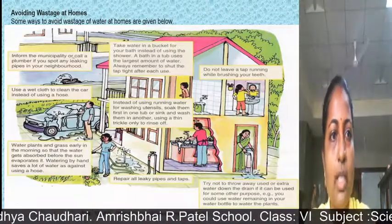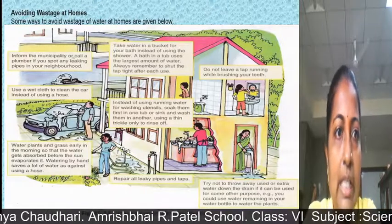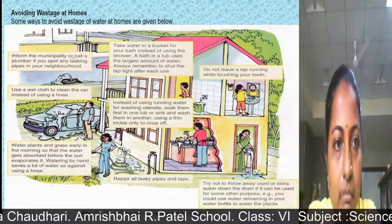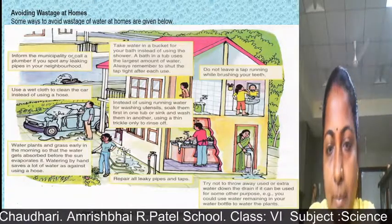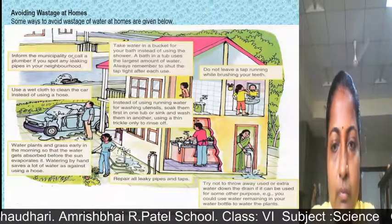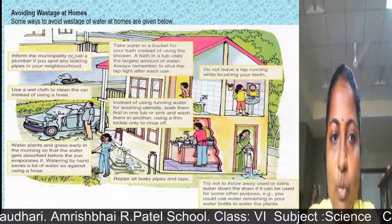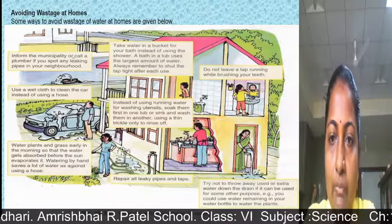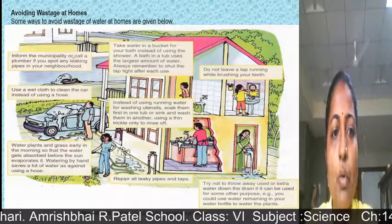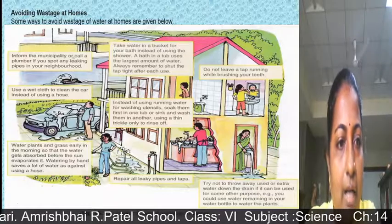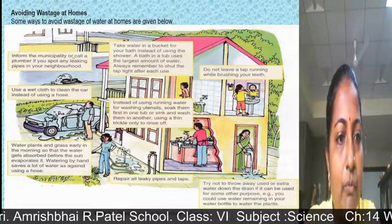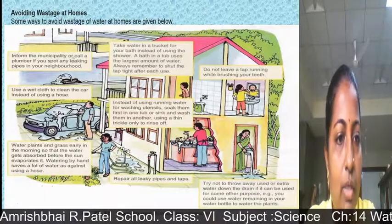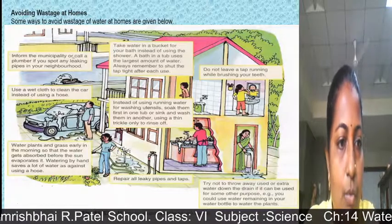Here are some more ways to avoid wastage of water: if any leakage is there, inform the municipality or call a plumber. We should not use a hose pipe to wash our cars or vehicles — use a wet cloth to wipe them instead. Water the plants and grass early in the morning so that the water gets absorbed before the sun evaporates it. Watering by hand saves a lot of water compared to using a hose.